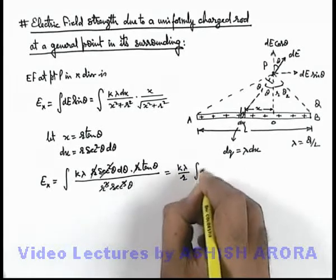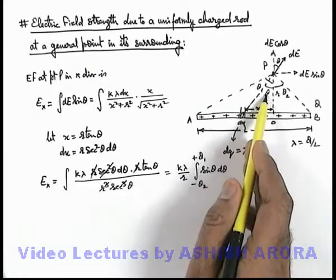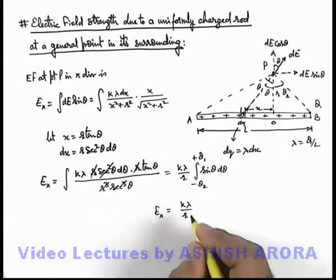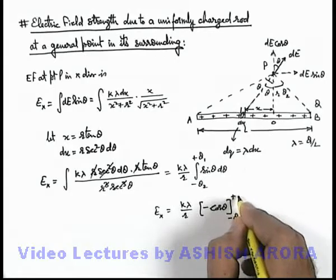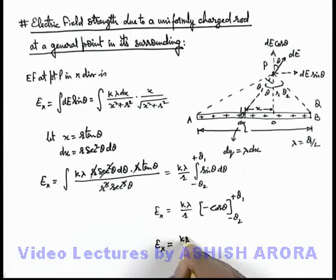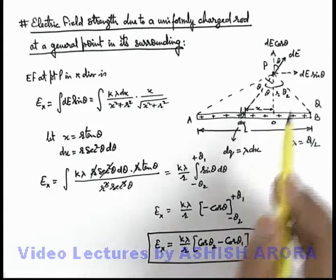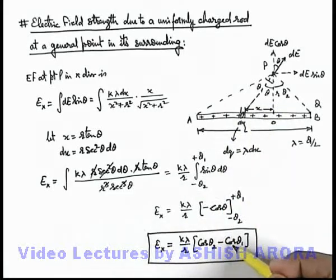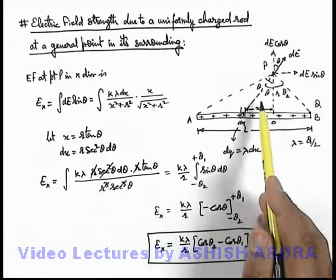So this gives us k·lambda divided by r, times the integration of sine(theta)·d(theta), integrated from minus theta₂ to plus theta₁. On integrating, Ex equals k·lambda divided by r, and the integral of sine(theta) is minus cosine(theta). Applying limits from minus theta₂ to plus theta₁, the electric field in the x direction becomes k·lambda divided by r times (cosine(theta₂) minus cosine(theta₁)). Be careful: if point P is exactly in the middle, theta₁ equals theta₂, these two cancel out, and the electric field in the x direction becomes zero — the same situation as the electric field at an equatorial point of a rod.